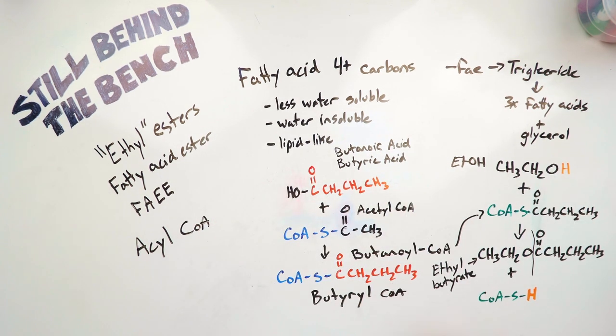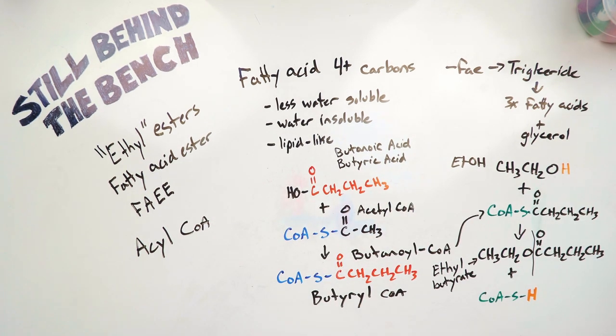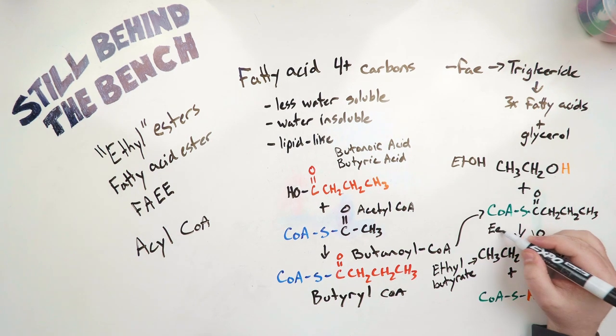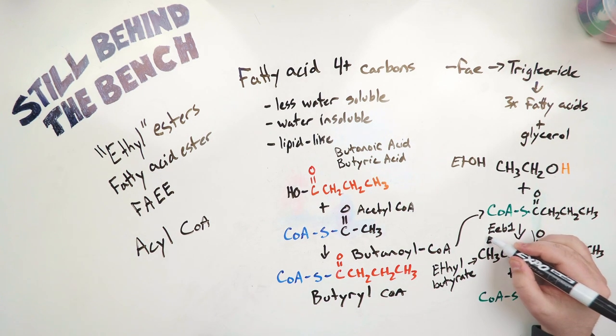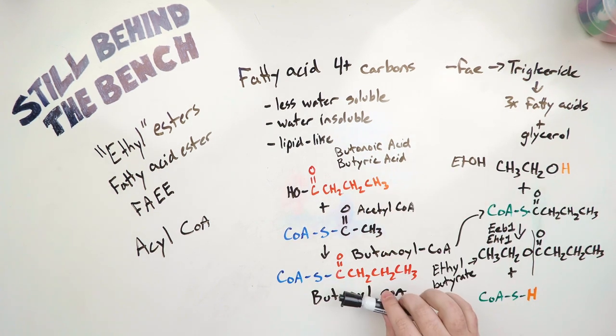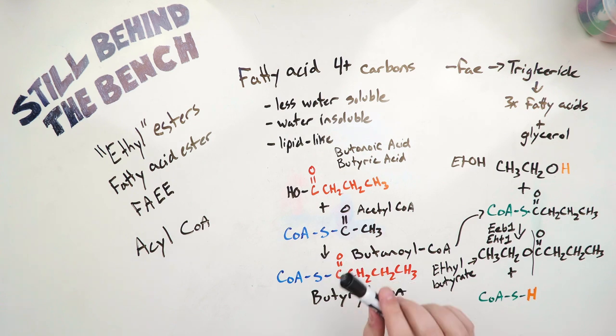So this enzymatic process, I forgot to put the enzyme in there. The enzyme comes in over here. It would be EEB1, or EHT1. Trying to find the enzymes that do this step here, the acyl coenzyme A, I couldn't find them. But yeah, not that much more complicated than the acetate esters. Just that one extra step. And this works with all kinds of alcohols, and with all kinds of acids. I don't think it does acetates, but it does everything else.